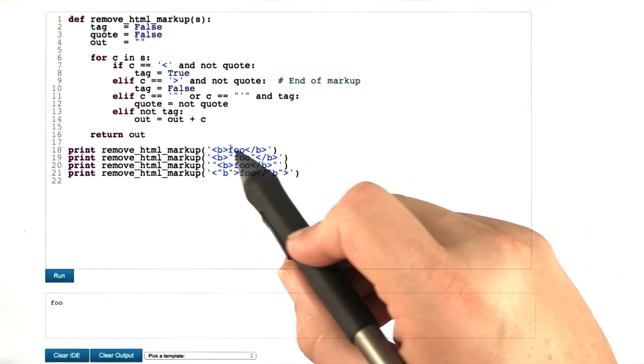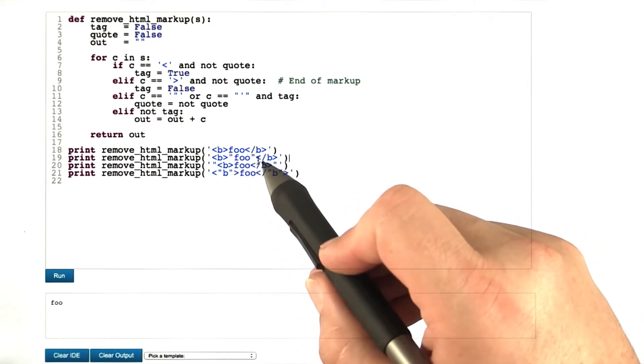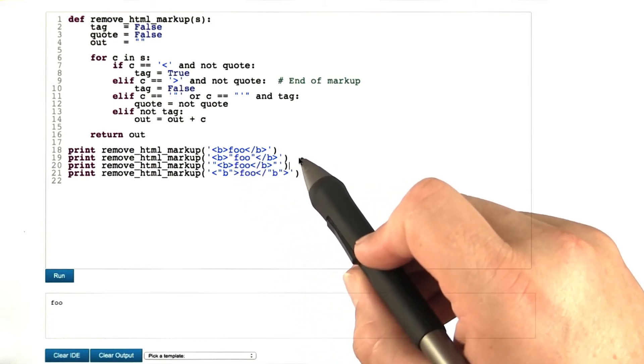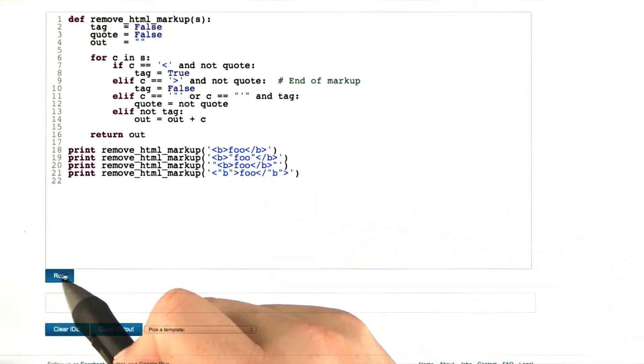For the first input, the output should be just the text foo. For the second one, it should be the same but enclosed in double quotes, as is the same for the third one. For the fourth one, we'd simply expect the text foo. Let's go and test this.